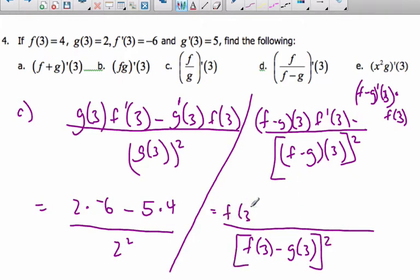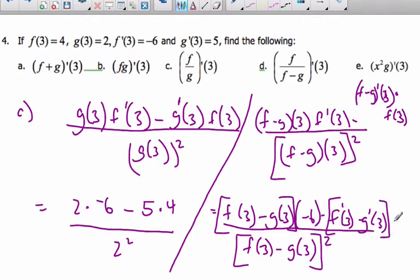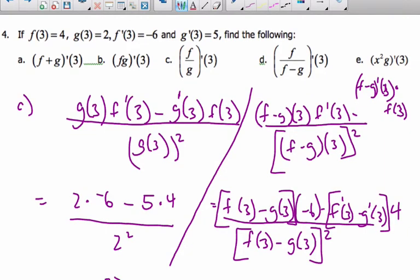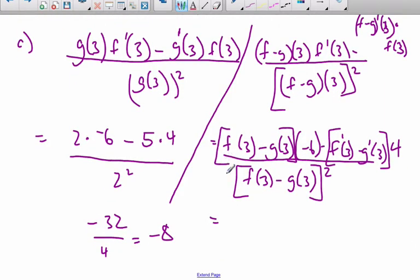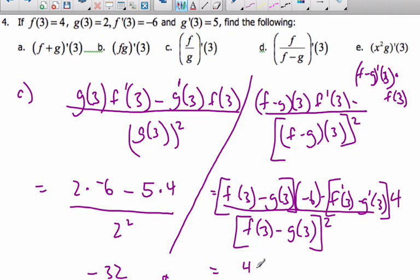This is f at 3, this is f at 3, and I'm going to take that and multiply it by the derivative at 3. For f is negative 6, minus, well, this is going to be f prime at 3 minus g at 3 minus g prime at 3, times f at 3 is 4. Okay, so plugging values in that I know, I know this is 4 minus 2 times negative 6, minus the derivative of 3 is negative 6, minus the derivative of g is 5, times 4, over f at 3 is 4, minus 2, 4 minus 2 is 2, squared, so it's 2 squared.